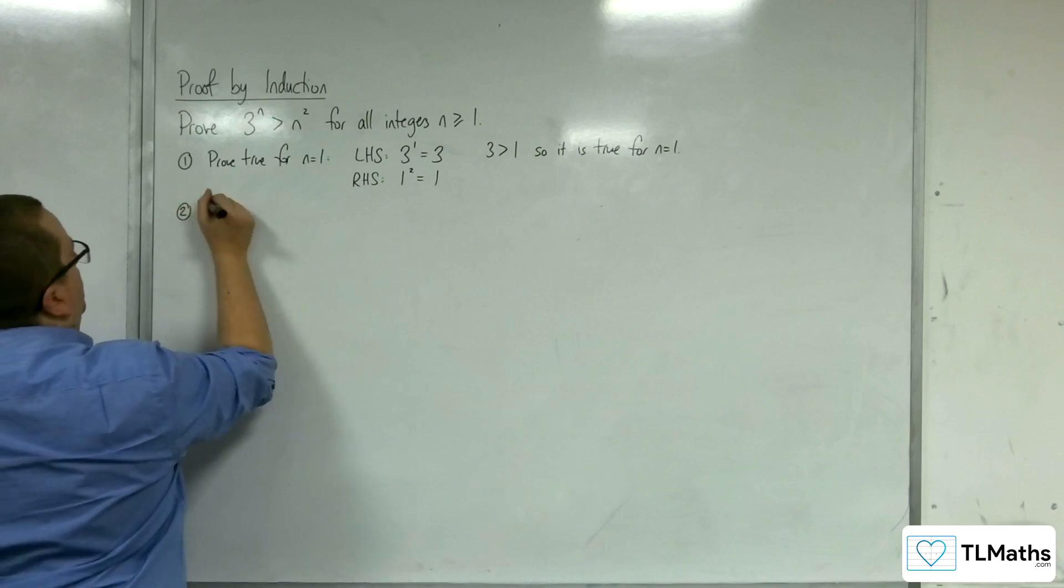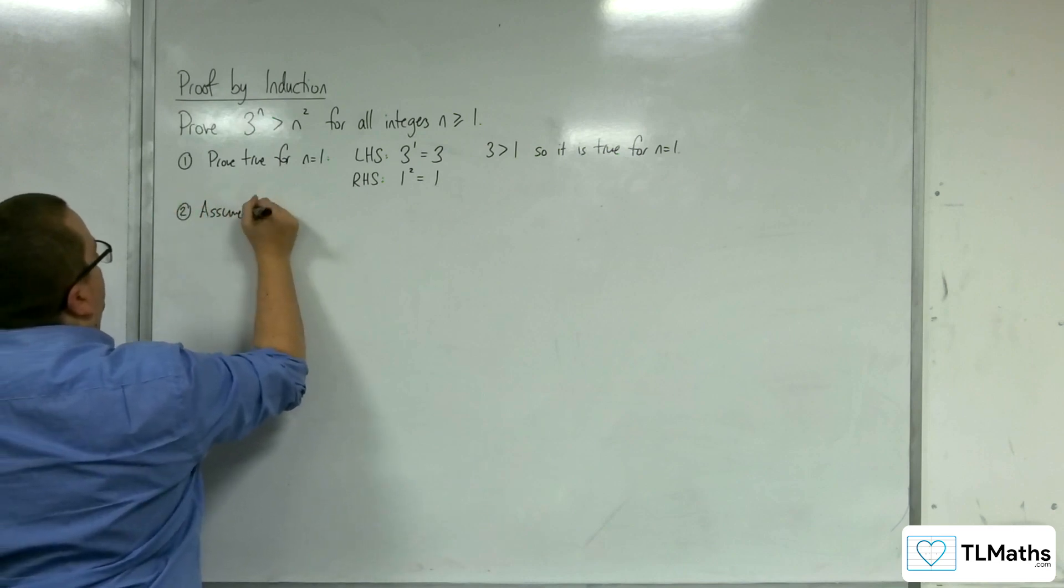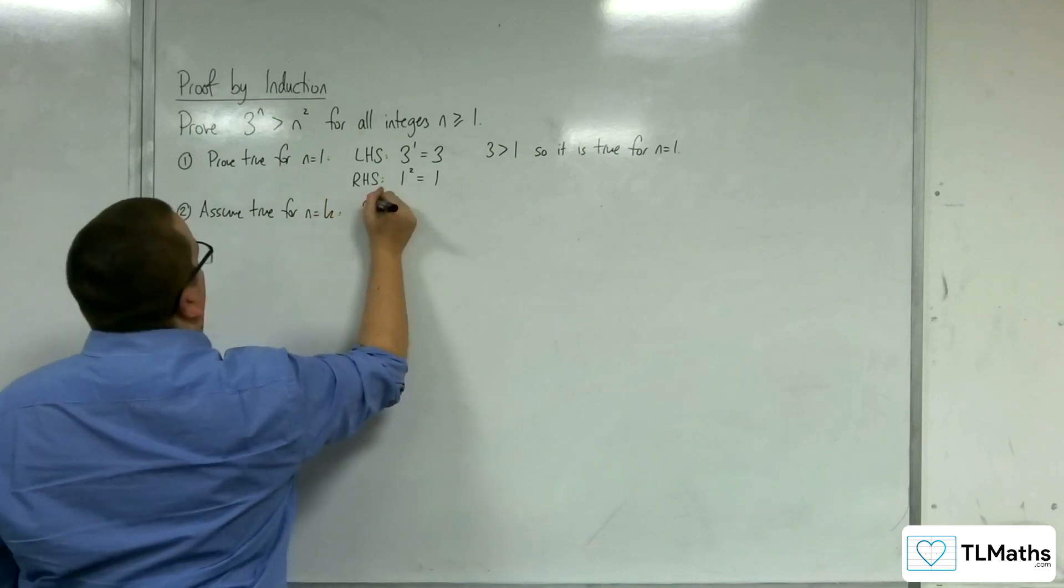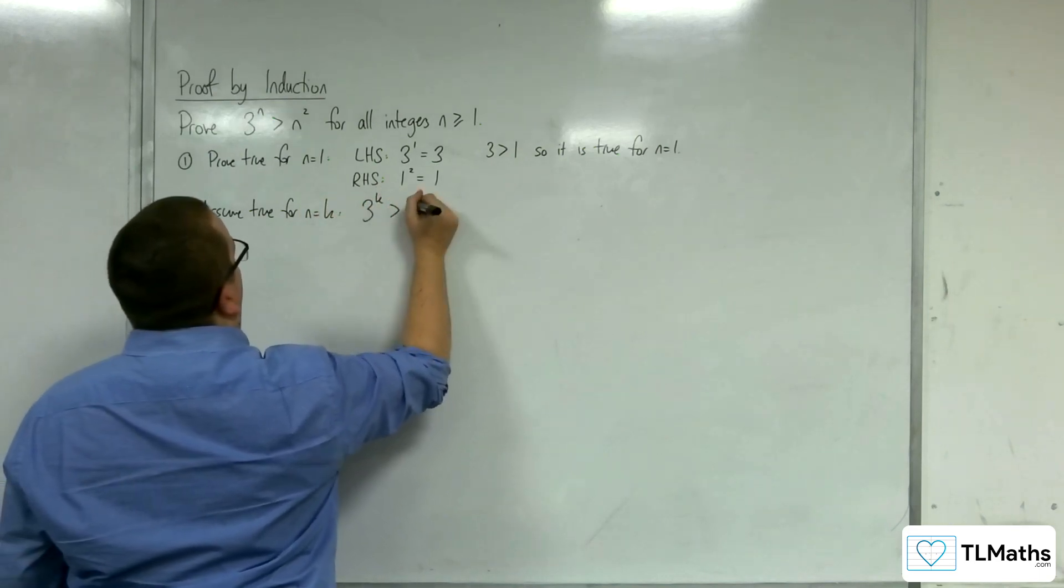Step 2: Assume true for n equals k. So 3 to the k is greater than k squared.